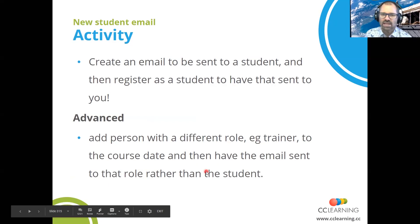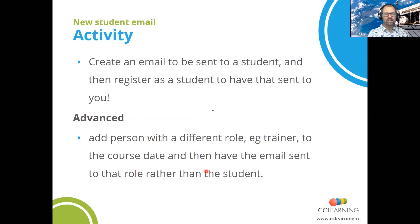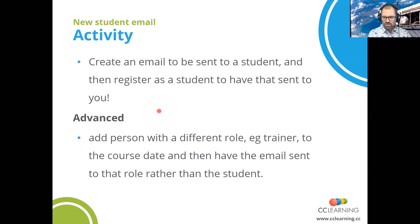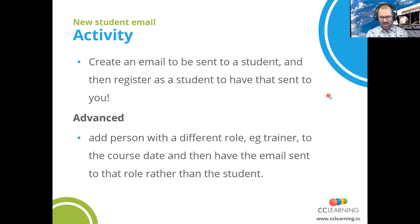Here's an activity for you: create an email to be sent to a student and then register as a student to have that email sent to you. That's a basic activity — just follow the step-by-step instructions. An advanced activity is to add a person with a different role — for example, a trainer — to the course date, and then have the email sent to that role rather than the student. I can see Cain is still on the line — let's unmute and see if you can think of any ways you can make use of this.